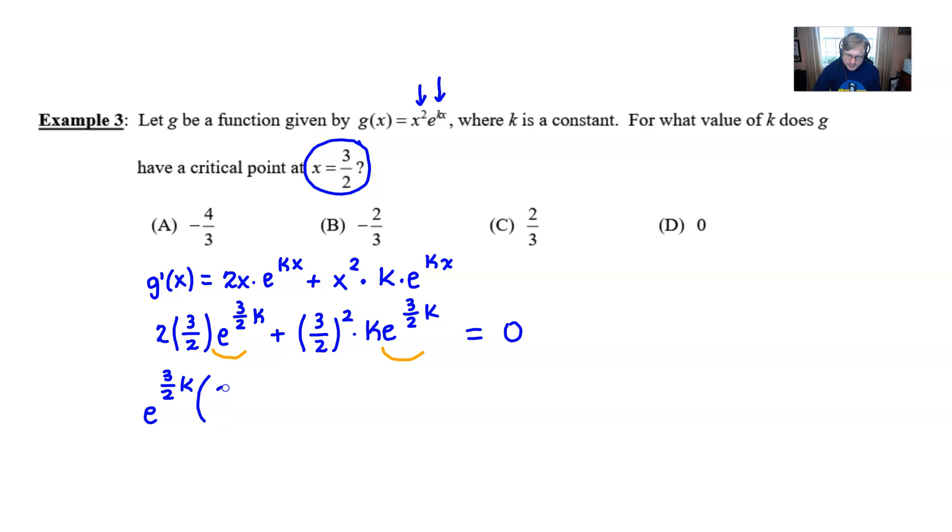In other words two times three halves I know is just a three plus and then the three halves squared is a nine fourths and I still have a k residing along with him. And so this essentially is the equation that I've got to be able to solve for k.